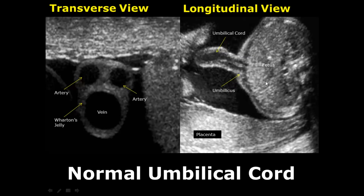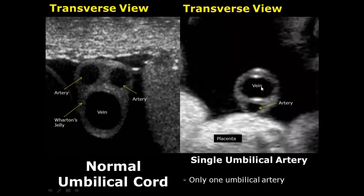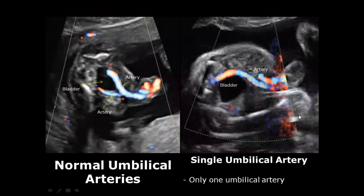Sometimes there may only be a single umbilical artery present. Here we can see only one umbilical artery in transverse view in its cross section. On color Doppler, we can further investigate a single umbilical artery.